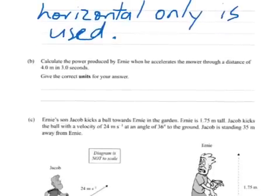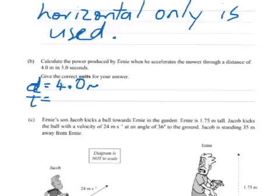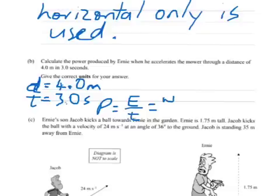So the vertical is kind of wasted if you like. Now part b: calculate the power produced by Ernie when he accelerates the mower through a distance of 4 meters in 3 seconds. So we've got the time, the distance, 4.0 meters. Decimals don't work too well with the stylus. Time given is 3.0 seconds. We have to work out the power, which is the rate of energy converted over time, or also the work done over time. And we know that work is force times distance.